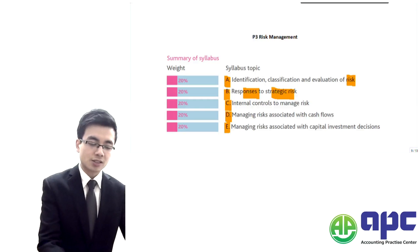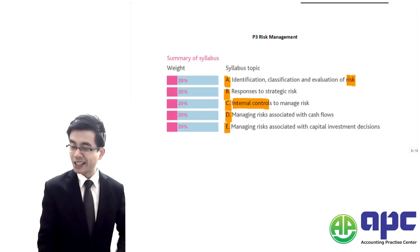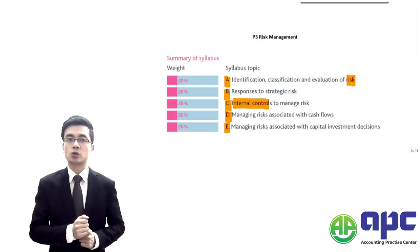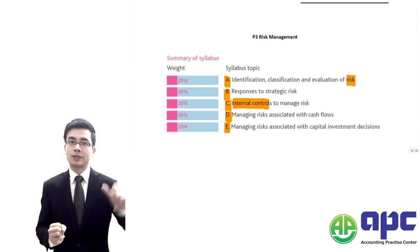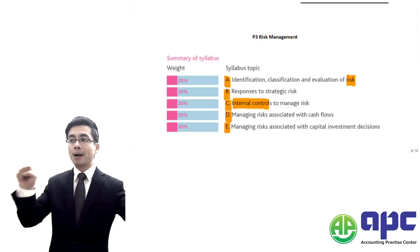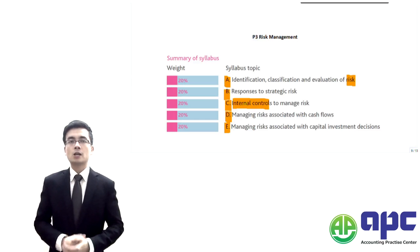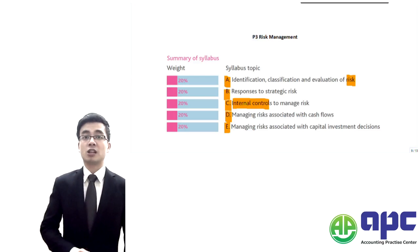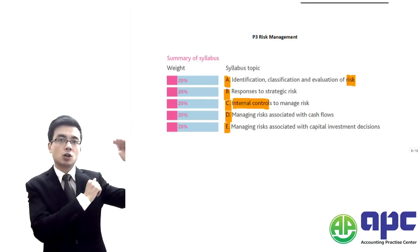In section C, it's talking about the internal controls related to risk. What do I mean by internal controls? The business activities making sure the good thing will happen and bad thing will not happen. That's what I mean by internal control systems. One example of the internal control systems to manage risk is that we have the risk committee or the audit committee sitting at the top.